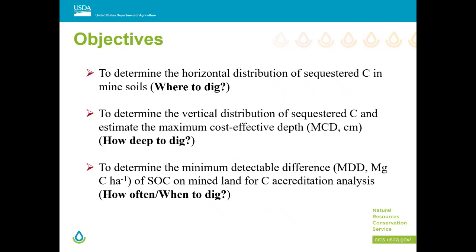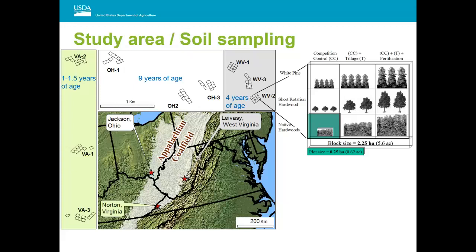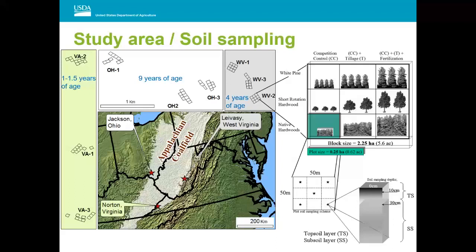How long does it take for soil carbon to accumulate so we can measure the difference? The study area for this project spanned three states in the Appalachian coal field, and the mine sites ranged from one to nine years of age, presenting a good opportunity to see how carbon accumulates in these soils. Soil samples were collected from the topsoil and subsoil across several experimental treatments set up for this project, with the goal of determining how well trees can be established on coal mine lands to increase soil carbon.